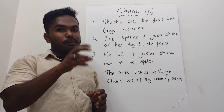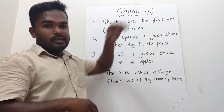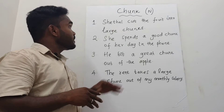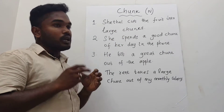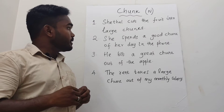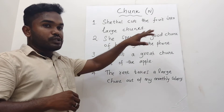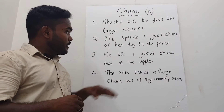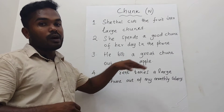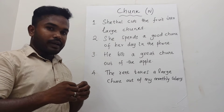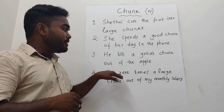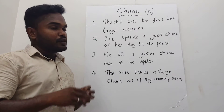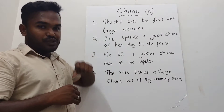A heavy or a huge portion of time or money can also be called a chunk. Now I'll give you the example sentences. The first example is: Sheetal cut the fruit into large chunks. The second example is: She spends a good chunk of her day on the phone. The third example is: He bit a great chunk out of the apple. The final sentence is: The rent takes a large chunk out of my monthly salary.